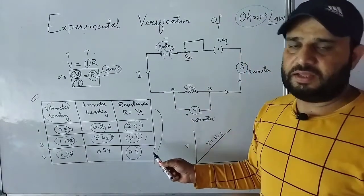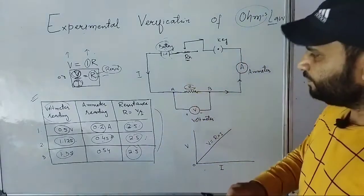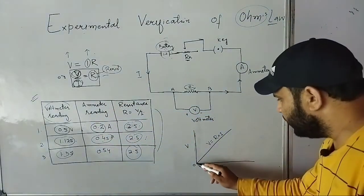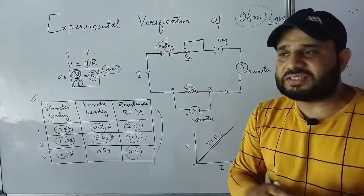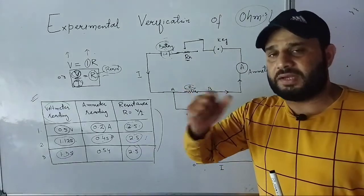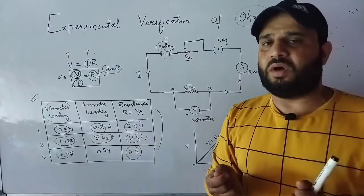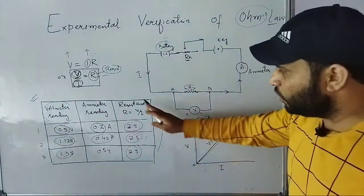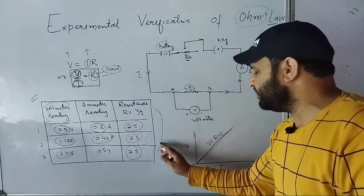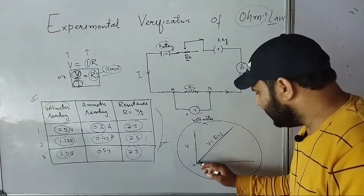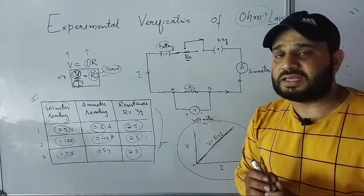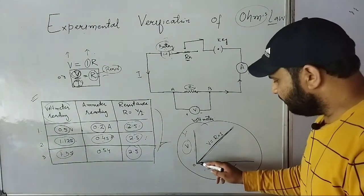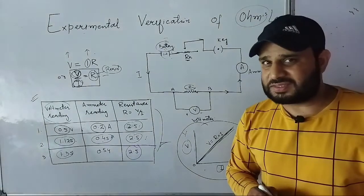Ohm's law is verified. If we plot a graph using these readings, it will be a straight line. The conductors that obey Ohm's law are called Ohmic conductors, and the conductors that do not obey Ohm's law are called non-Ohmic conductors. When you plot the graph, V is taken on the y-axis and I is taken on the x-axis, and it gives a straight line.